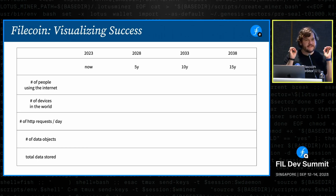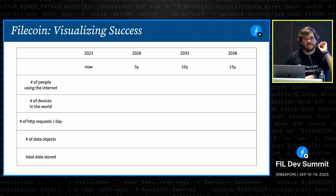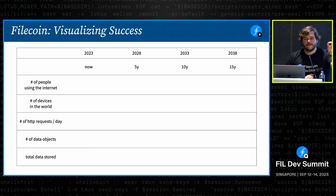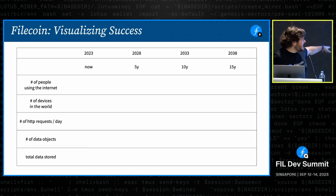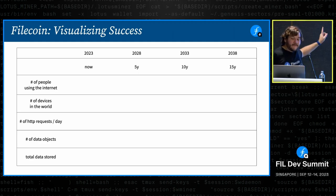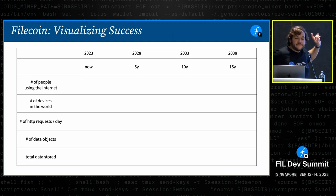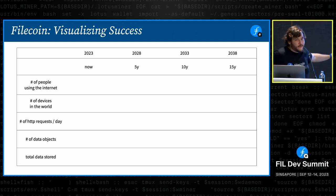Here's what we're going to do: we're going to visualize the success of Filecoin in the future — five years, ten years, and fifteen years — by looking at a few questions: the number of people using the internet, the number of devices in the world, the number of HTTP requests per day, the number of data objects, and the total amount of data stored in the world.